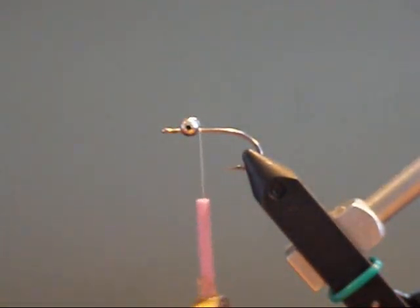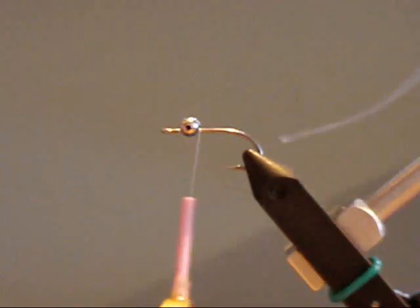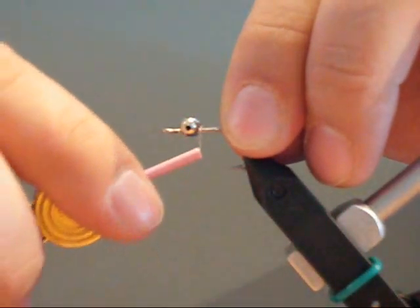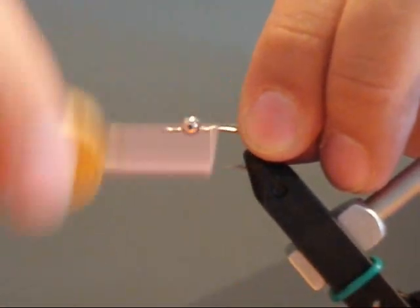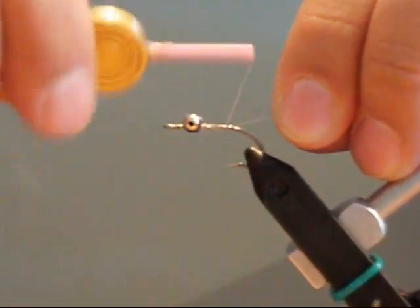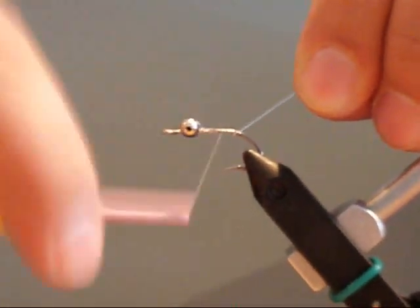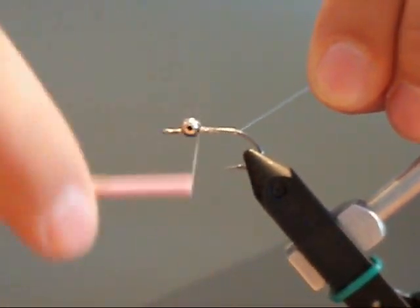For the next step, you'll tie on your overbody, and that'll either be a glass body or you could use round vinyl rib. I'm using a clear color so that the holographic tinsel that I'm going to tie on next appears through the glass body.